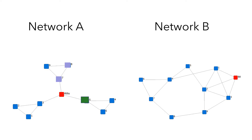Now let's look at a different network structure in network B. Network B has the same number of nodes as network A — it has 10 nodes. Bill has the same number of ties as Abby does; they both have three ties. Who is likely to have more innovative ideas, Abby or Bill? The answer is Abby. Even though Bill has the same number of ties as Abby, both ties are redundant. Because Bill's contacts — node 1, 2, 3 — are connected with one another. The idea Bill can get from node 1 is similar to the ideas offered by node 2 or 3.